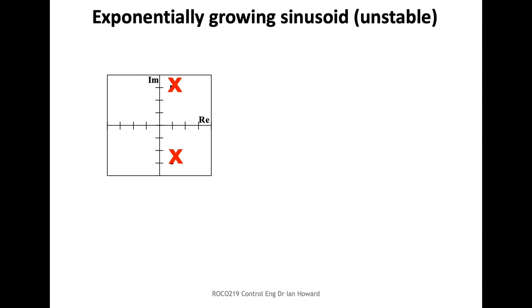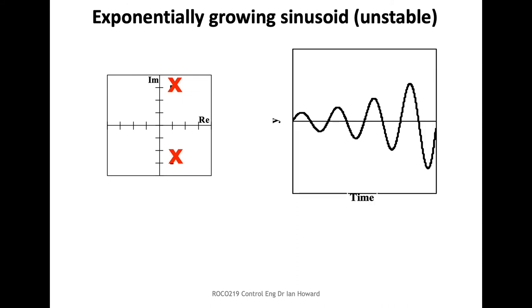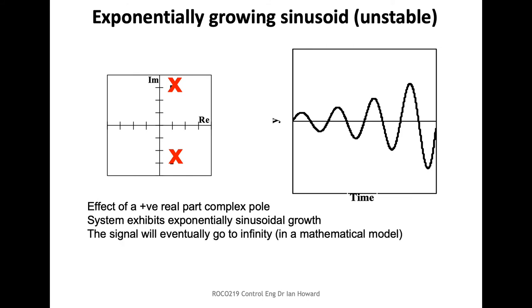Conversely, if we have a positive real part and imaginary components, the system is going to be oscillating but increasing. It will start off and exponentially increase — an exponentially increasing envelope. Theoretically, this thing is going to hit infinity if you wait long enough and the system is going to be unstable. In the real world, we'd end up with clipping issues or overflow issues in a digital system. In a nutshell, this is unstable behaviour and we don't want it.